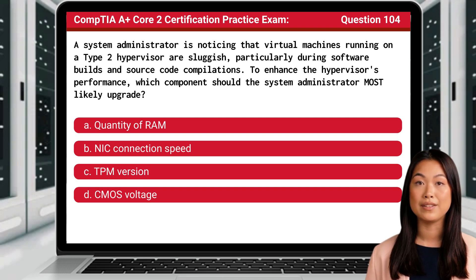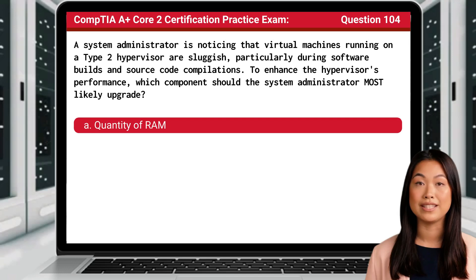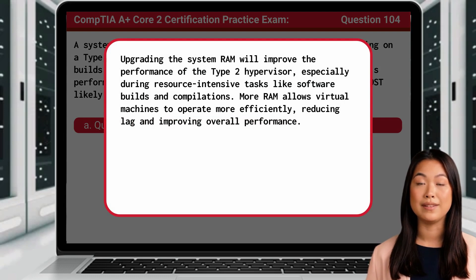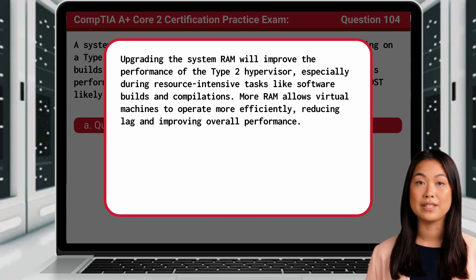The answer is A: Quantity of RAM. Upgrading the system RAM will improve the performance of the Type 2 hypervisor, especially during resource-intensive tasks like software builds and compilations. More RAM allows virtual machines to operate more efficiently, reducing lag and improving overall performance.